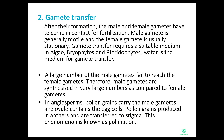The second process of the pre-fertilization event is gamete transfer. So the two pre-fertilization events are: first, gametogenesis — formation of gametes — and second, gamete transfer. After their formation, the male and female gametes have to come in contact for fertilization.